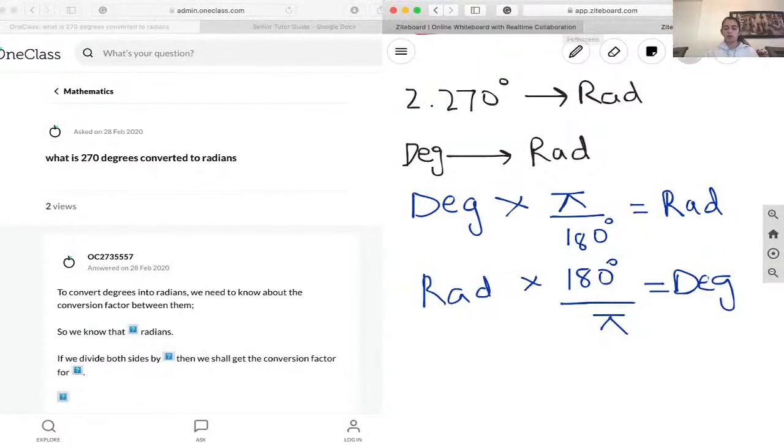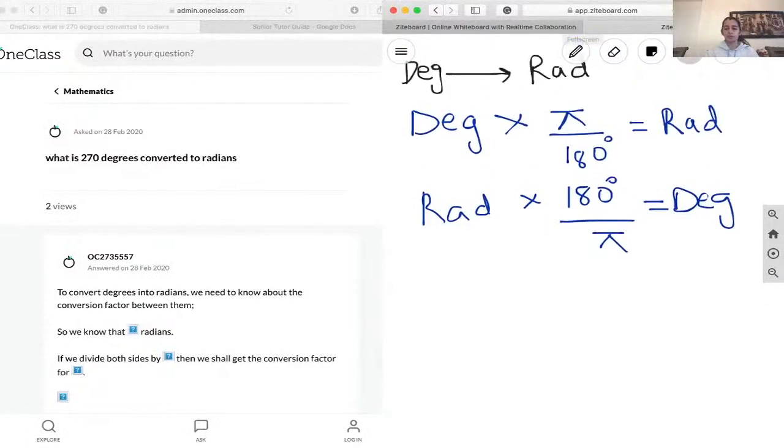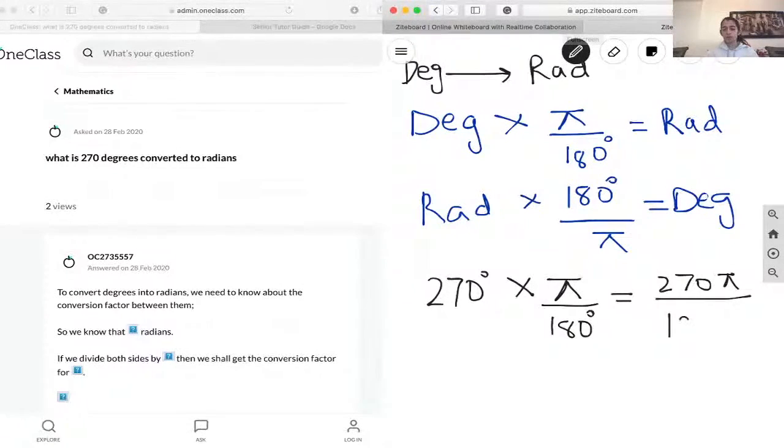So in this question, in our example, we're going to be using the first formula right here, this one. We're going to take 270 degrees and times it by pi over 180. And the degrees sign on both ends cancel out. So we're just left with 270 pi over 180.